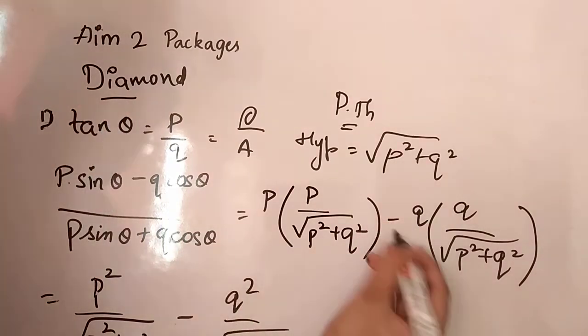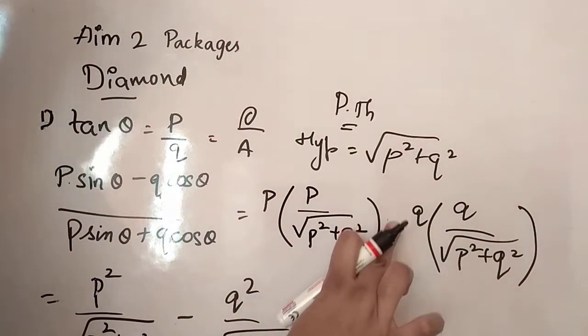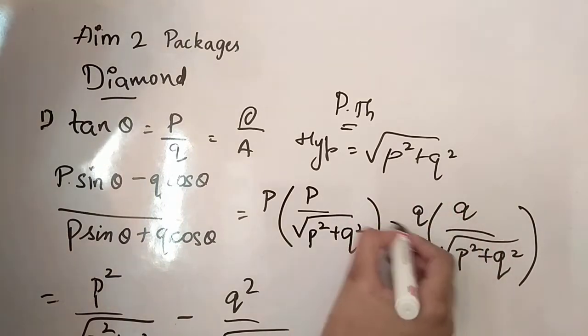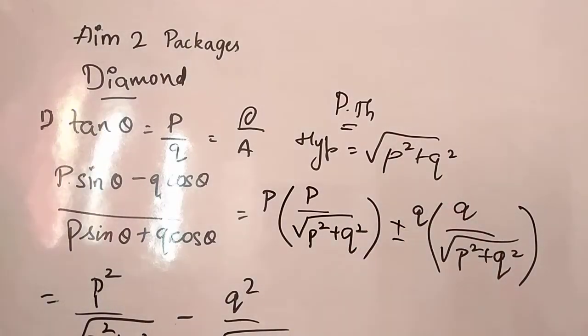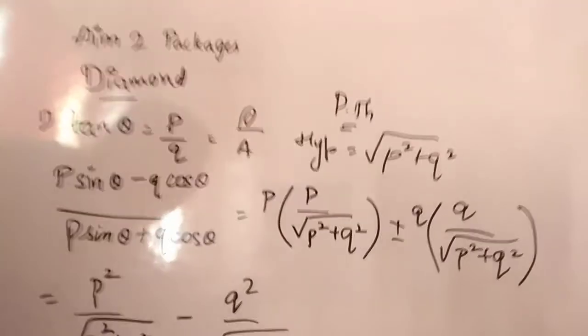just minus will be, sorry, instead of minus, plus will be there. So these two, same thing, right? So plus, minus, so both we can use. So that's why, down I am writing, I think it's not seen, one second.